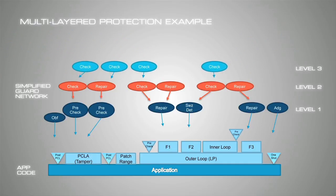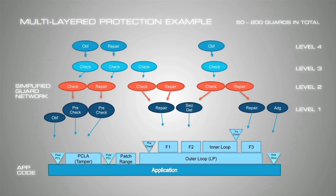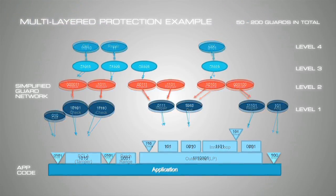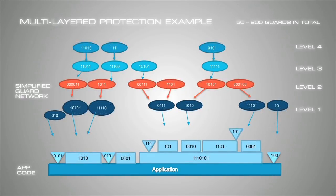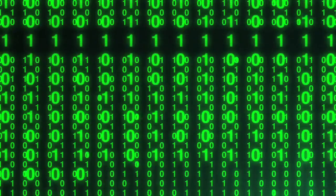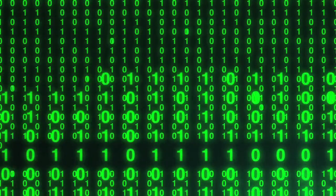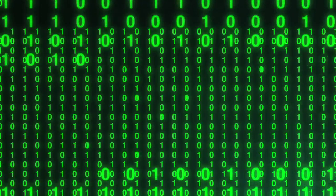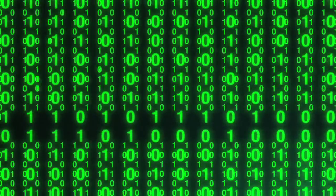Any given guard is very hard to locate as it's obfuscated, there's no signature or footprint, and it's infused into the binary code. The multi-layered and networked nature exponentially raises the bar for attack attempts and makes it extremely resilient. Multiple randomization techniques can be used to further confuse hacking attempts.